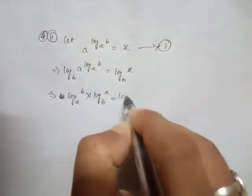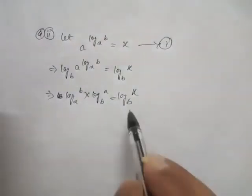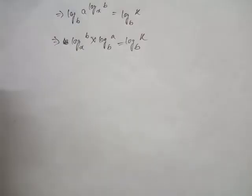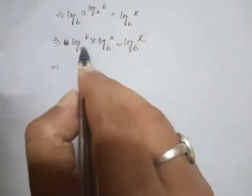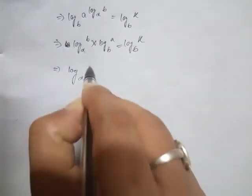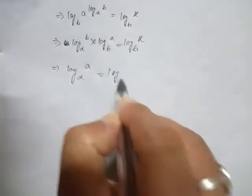Now look here after that, then equal to log b then k log base b k. After that, b and b cancel so log base x there is a and log base b there is k.